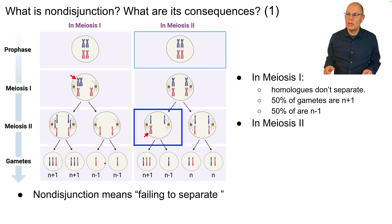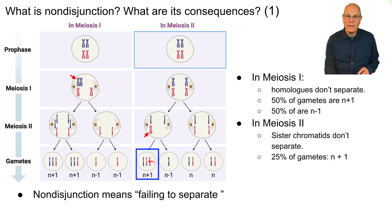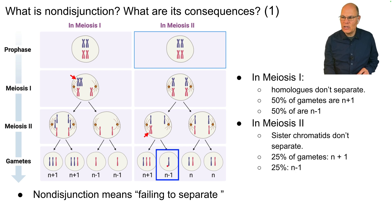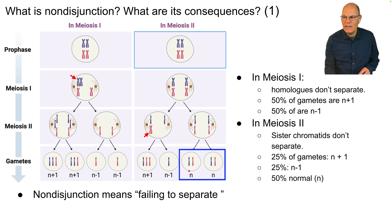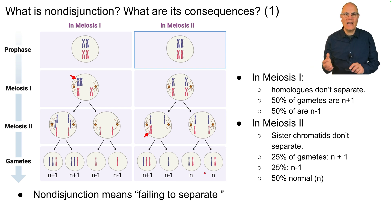If nondisjunction occurs during meiosis 2, it involves the sister chromatids not separating. The sister chromatids don't pull apart. So the result is that 25% of the gametes are n plus one, 25% are n minus one (the haploid number but missing one), and then 50% of the gametes will be normal. That's what nondisjunction is and how it can happen in meiosis 1 or meiosis 2.